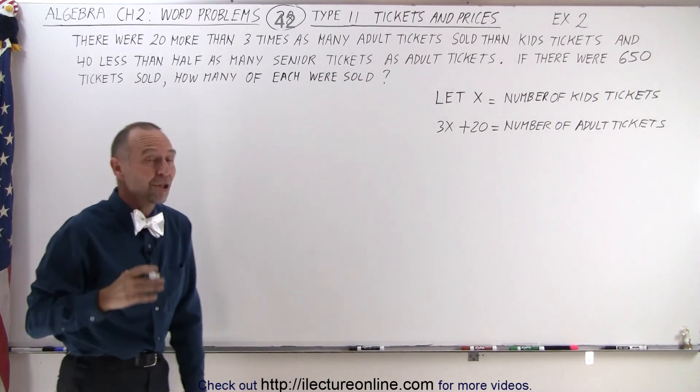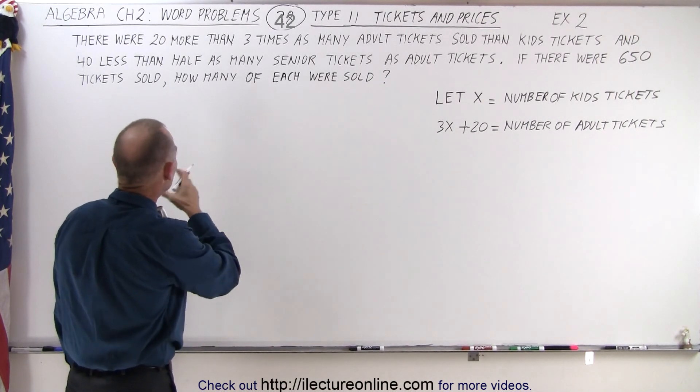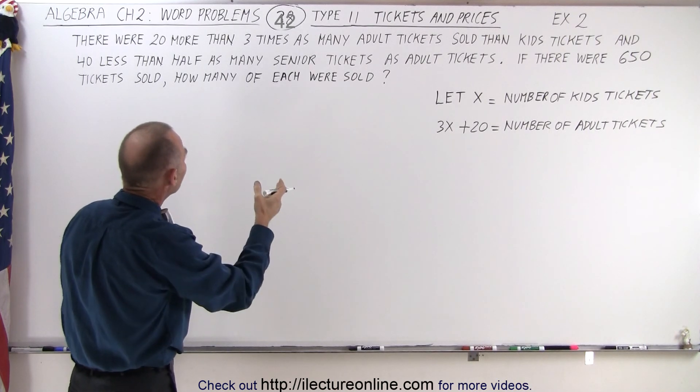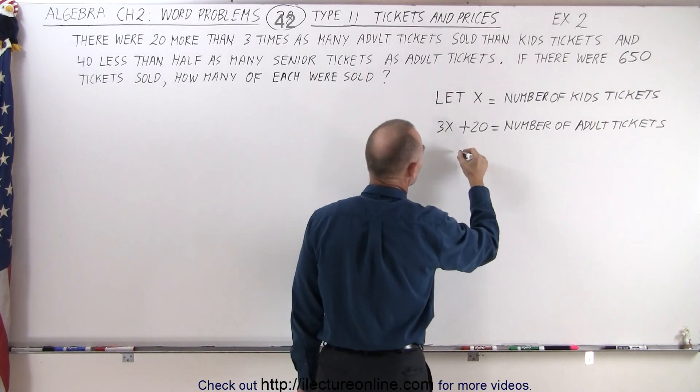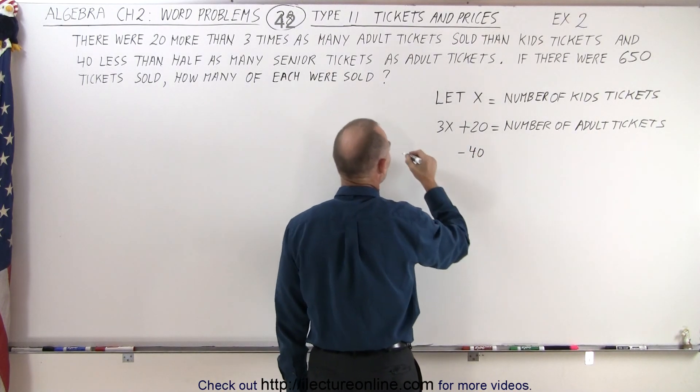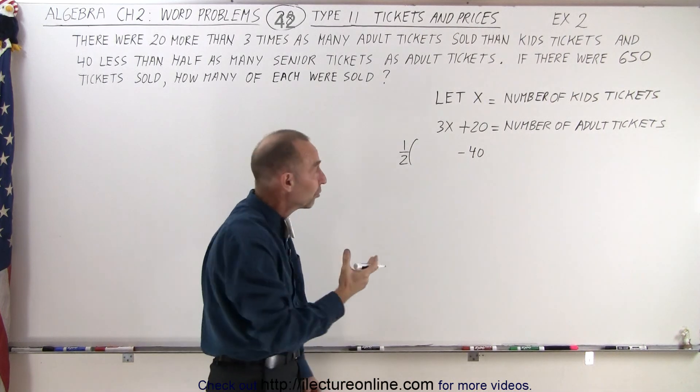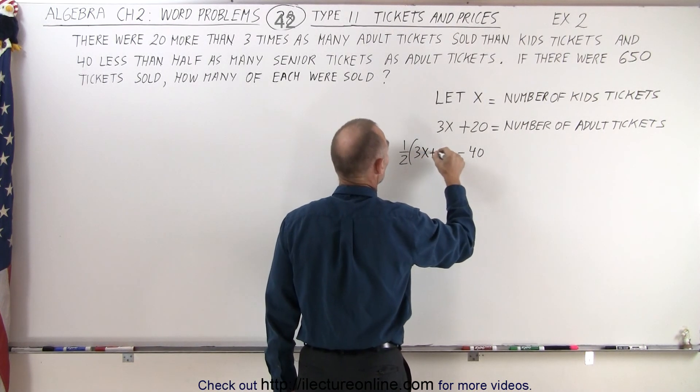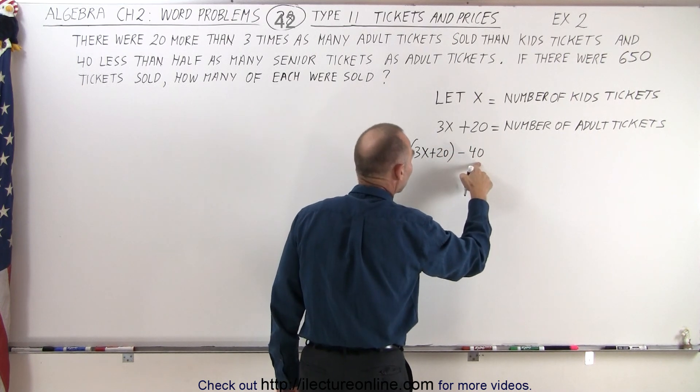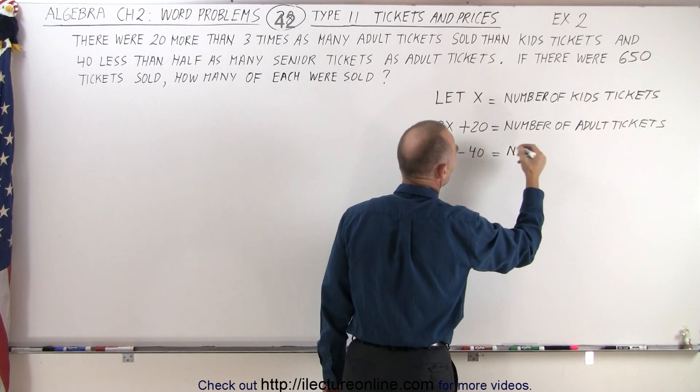Finally, we need to express the number of senior tickets. It's compared to the number of adult tickets and it's forty less than half as many. So forty less is minus forty, and half as many would be one half. Of course it's referenced to adult tickets, so half as many as adult tickets would be half as many as 3x plus twenty. Forty less than half as many of the adult tickets equals the number of senior tickets.